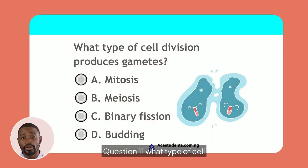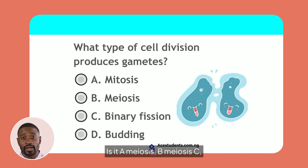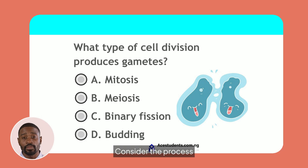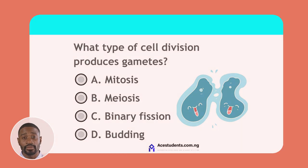Question 11. What type of cell division produces gametes? Is it A. Mitosis, B. Meiosis, C. Binary fission, or D. Budding? Consider the process of forming reproductive cells.